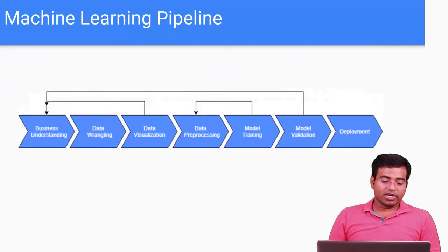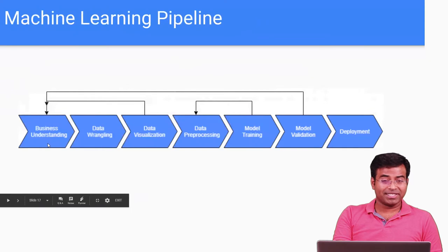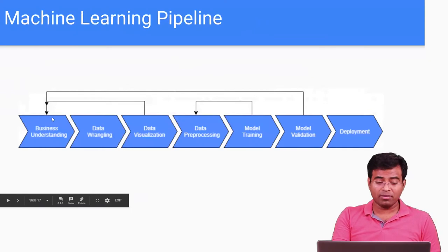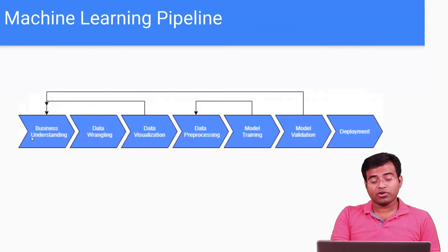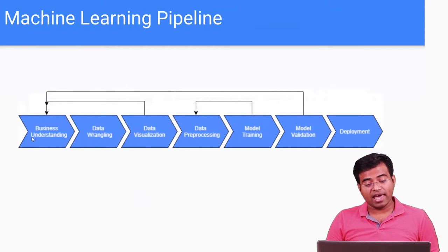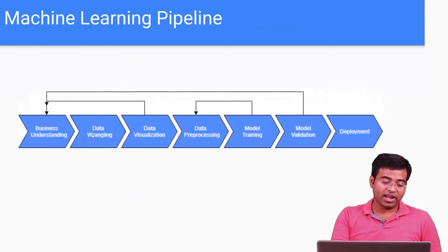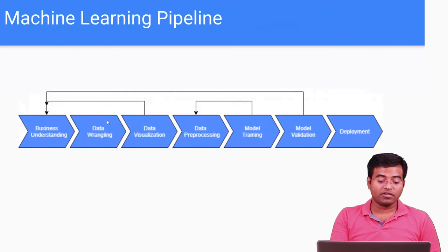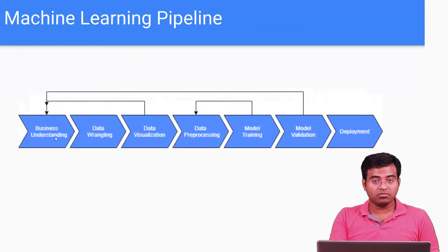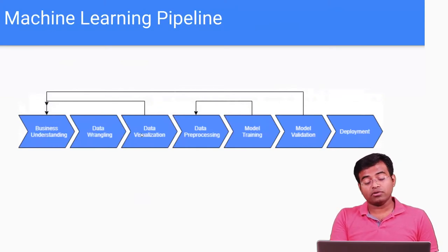In the entire machine learning product, you have a pipeline. First, you have to understand the business — what you're trying to do. Companies spend a lot of time here. Then you have data wrangling — once you understand the business and what you're trying to achieve, you need to get and process the data. Data wrangling includes data ingestion, data processing, and cleaning. After that, you get into visualization. If upon visualization you realize you're not achieving your business objective properly, you revisit the entire thing — that's why there's a loop. Assuming things are fine, you proceed with data pre-processing so that machine learning algorithms can work on it.